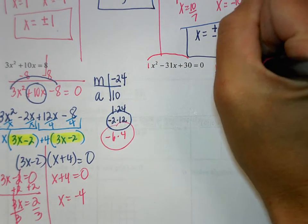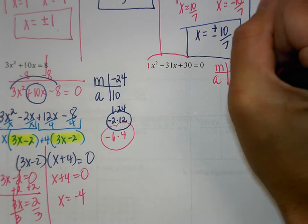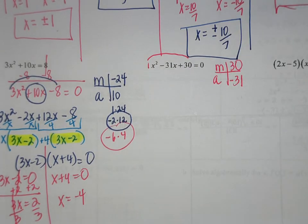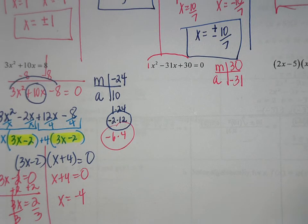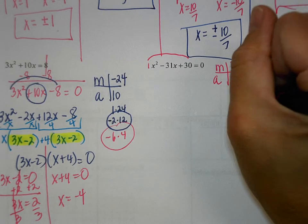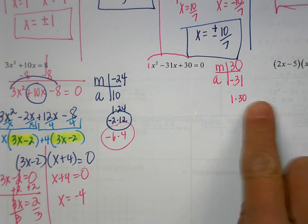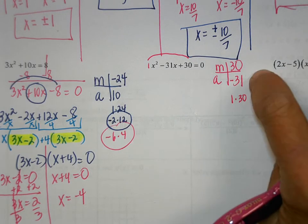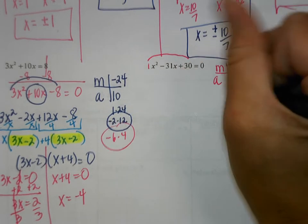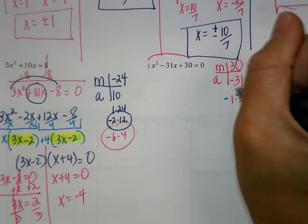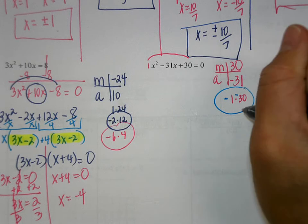Just to note: the multiplication number for the skipped example would be 30, and the adding number would be negative 31. The two numbers that work are negative 1 and negative 30 — when you add those they make negative 31, but when you multiply them they make a positive 30.